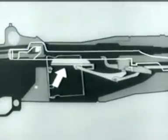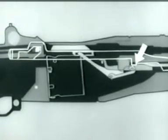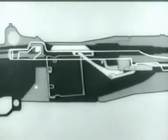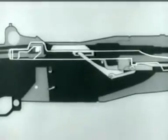Let's repeat this action again. The follower goes up, the operating rod catch is cammed up and catches the operating rod. The latch releases the clip and it's kicked out of the receiver.